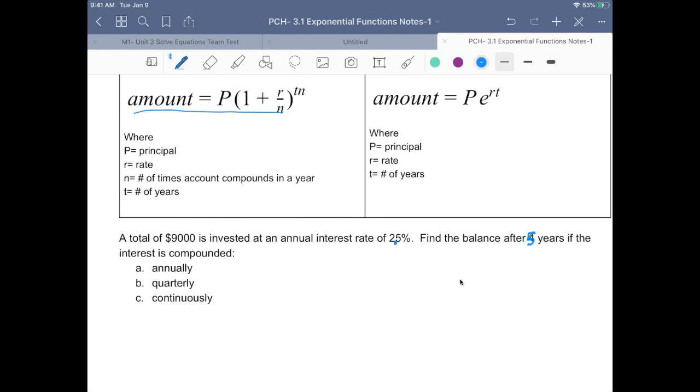So the last one, remember, we're going to use PERT. The other two, we're going to use the first formula. Okay, so for annually, the amount is equal to the principal times (1 plus r/n) to the time in years times the number of times you compound in a year.